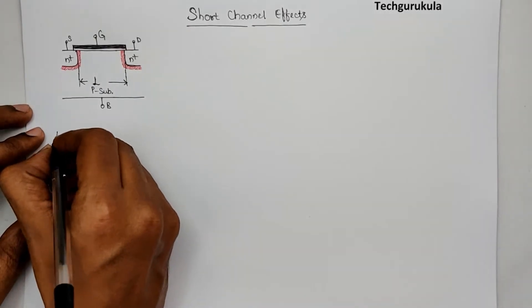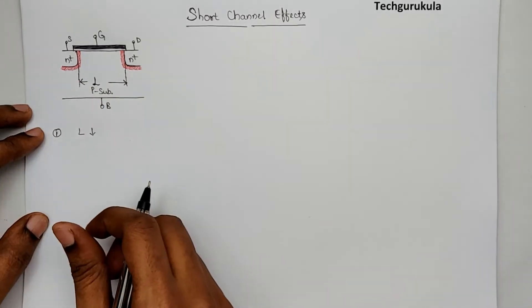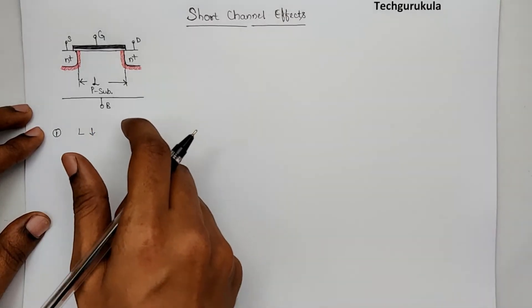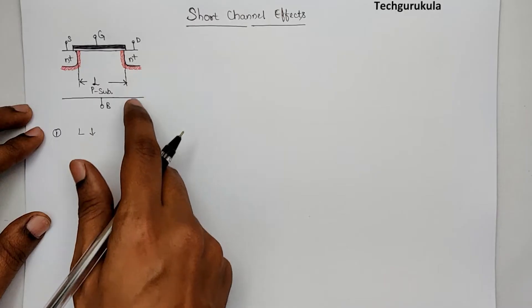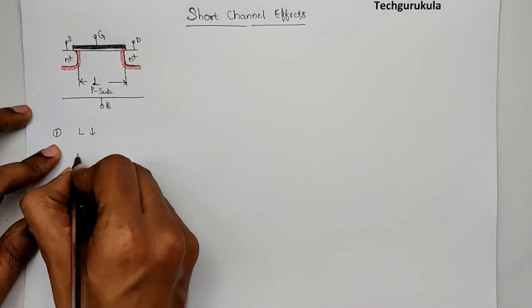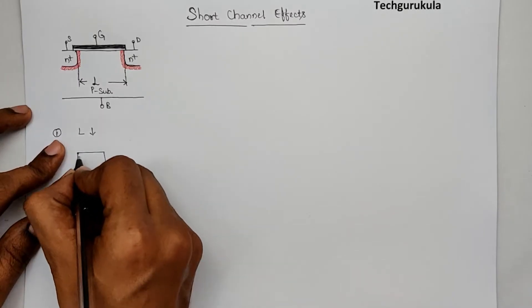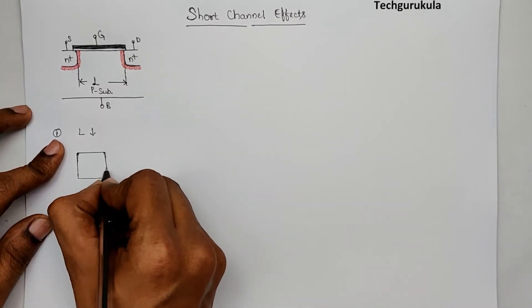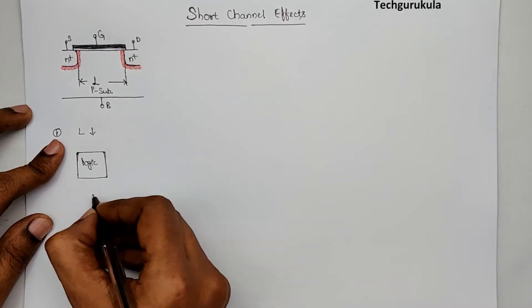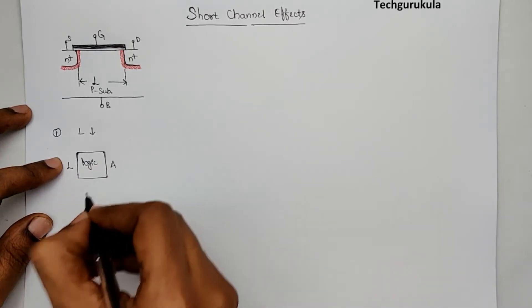First thing, if you reduce the channel length of a device, the device becomes smaller, which would mean that the area taken by a MOSFET would reduce. So, to better understand this, let me take that I'm trying to implement a logic, digital logic or analog logic, let's say that is logic 1, with a channel length of L.